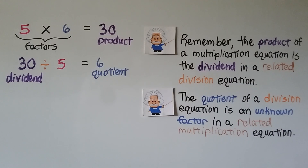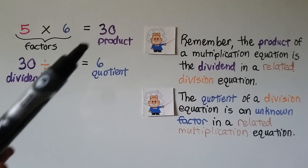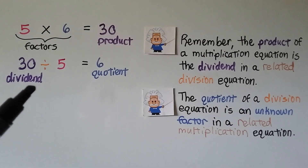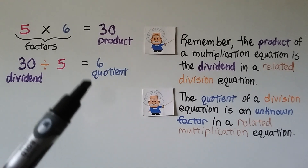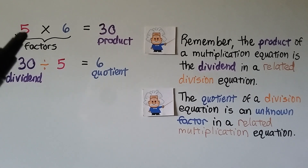Remember: the product of a multiplication equation is the dividend in a related division equation, and the quotient of a division equation is an unknown factor in a related multiplication equation.